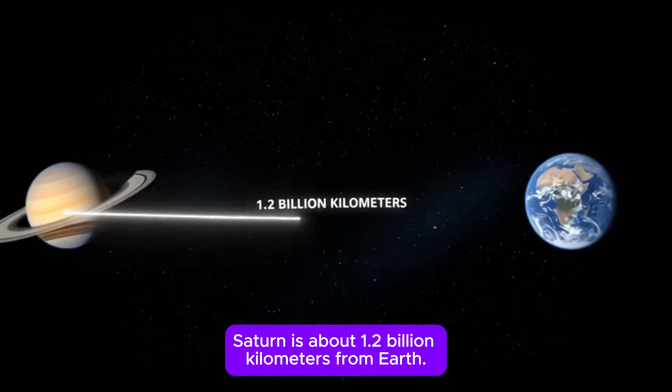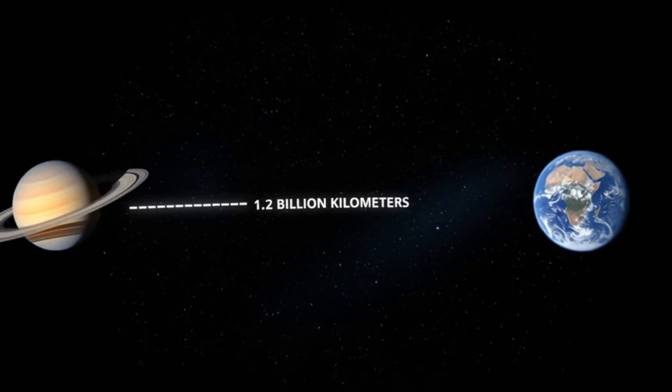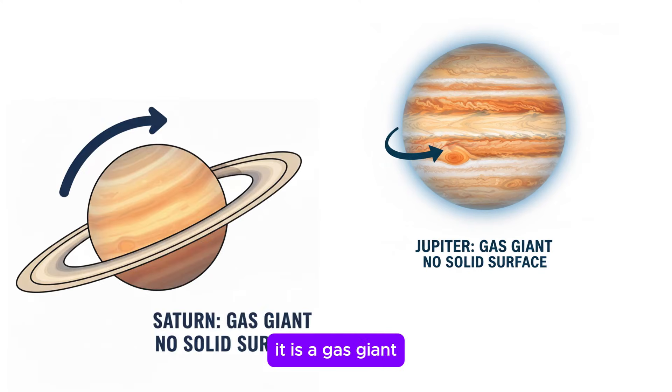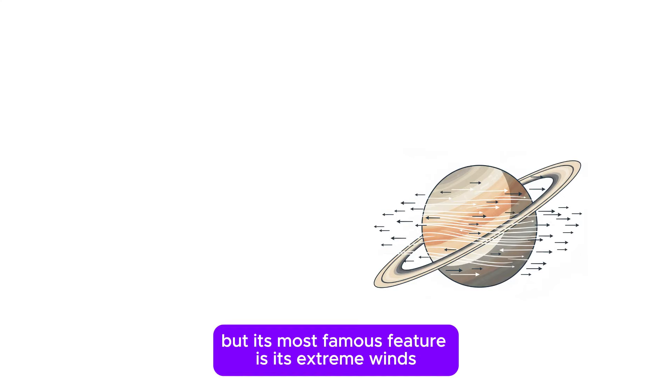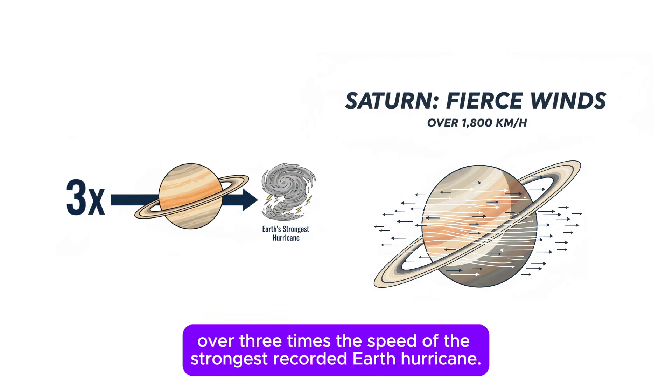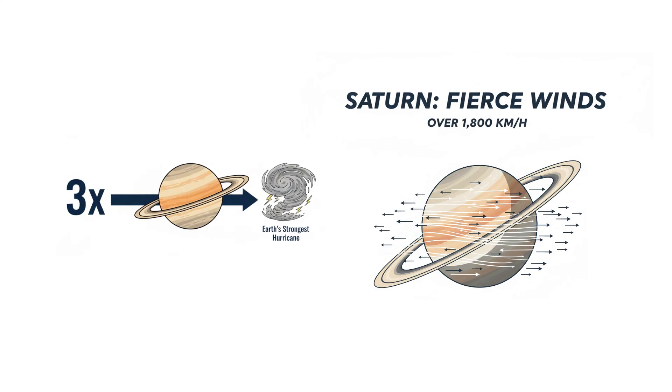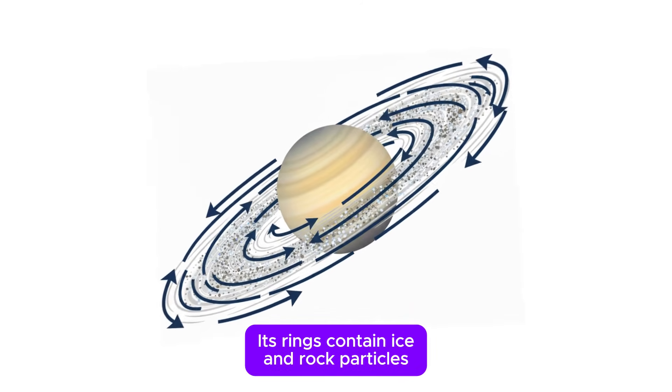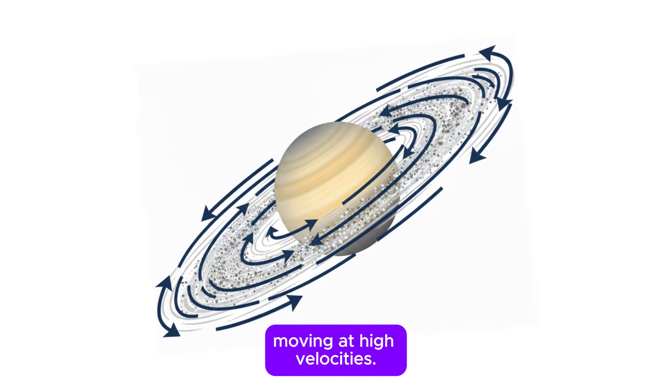Saturn is about 1.2 billion kilometers from Earth. Like Jupiter, it is a gas giant, but its most famous feature is its extreme winds, which can reach 1,800 kilometers per hour, over three times the speed of the strongest recorded Earth hurricane. Its rings contain ice and rock particles moving at high velocities.